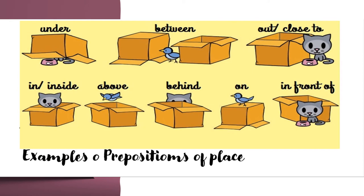Behind — the cat is behind the box. 'On' is the opposite of 'under' — the bird is on the box. Last one: 'in front of', which is the opposite of 'behind'.